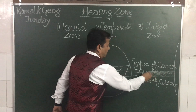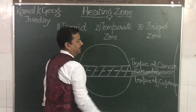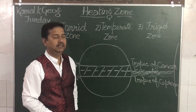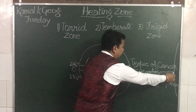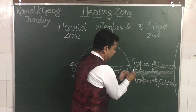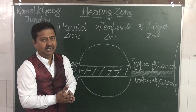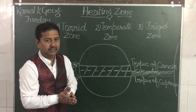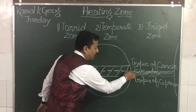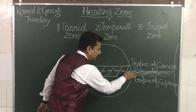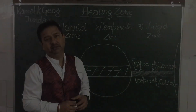The distance between the sun and this region is less, and the rays occupy less area, so they give more heat.